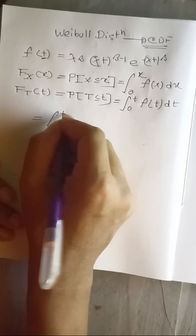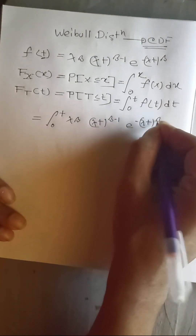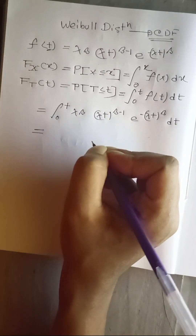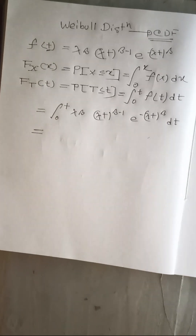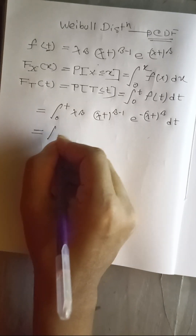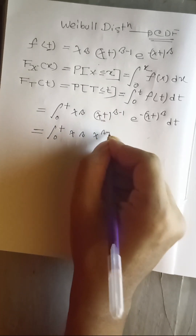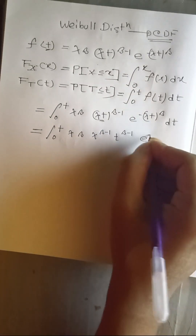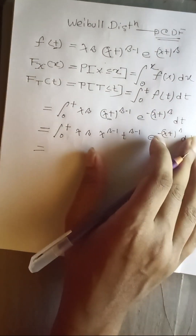We will substitute the values, so we get the integration from 0 to t of λβ(λt)^(β-1) · e^(-(λt)^β) dt. We can rewrite this as the integral from 0 to t of λβ · λ^(β-1) · t^(β-1) · e^(-(λt)^β) dt.